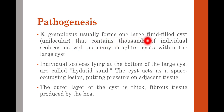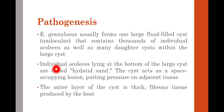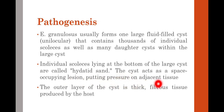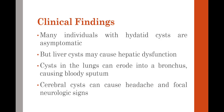Regarding pathogenesis, Echinococcus granulosis usually forms one large fluid-filled unilocular cyst that contains thousands of individual scoleces — the heads of the worm — as well as many daughter cysts within the large cyst. Individual scoleces lying at the bottom of the large cyst are called hydatid sand. The cyst acts as a space-occupying lesion, putting pressure on adjacent tissue. The outer layer of the cyst is thick fibrous tissue produced by the host.